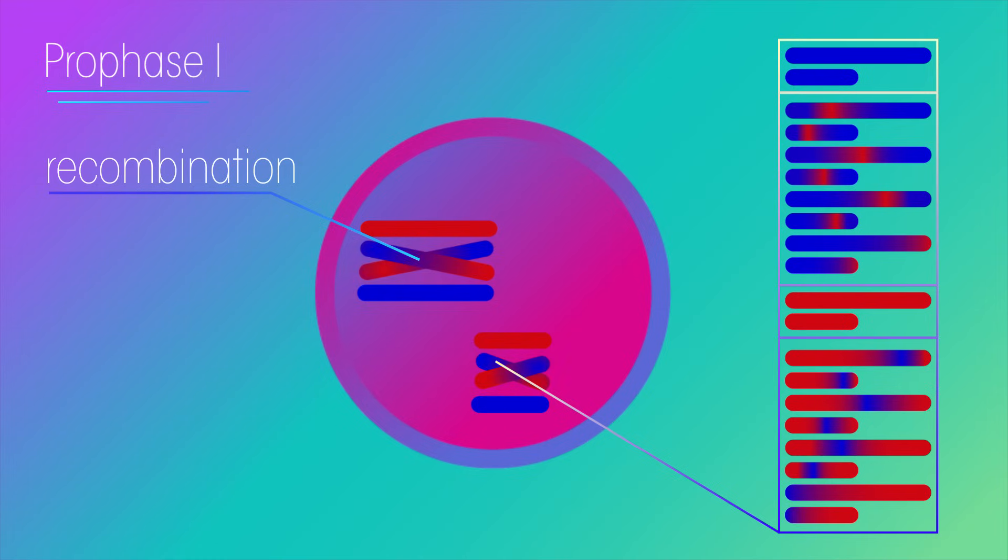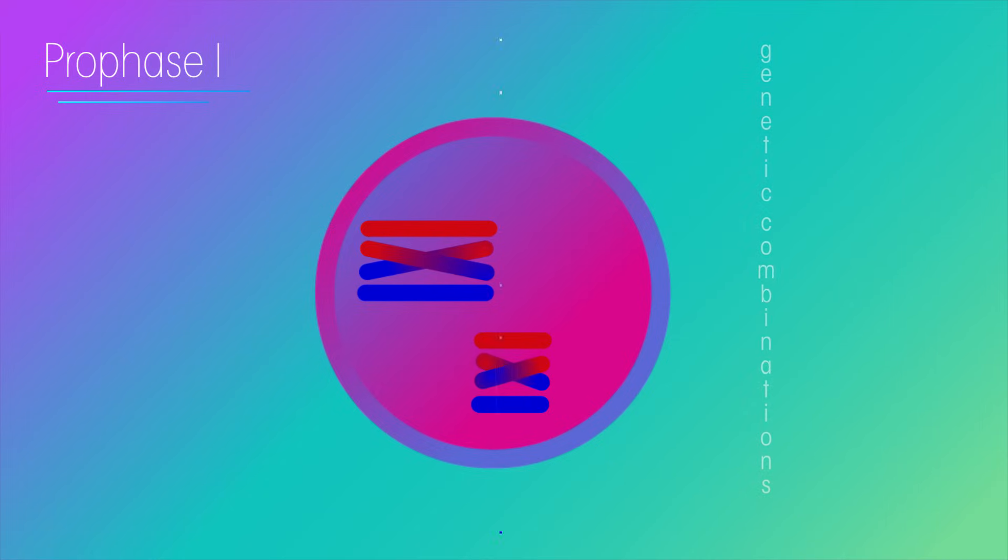The new cells aren't identical to either parent, and they're also different from one another as well. They are new genetic combinations. In fact, that's the whole point of sexual reproduction: it increases genetic variability. Each chromatid is now different, and as each one will end up in a separate gamete, it means each sex cell is genetically different from all others.